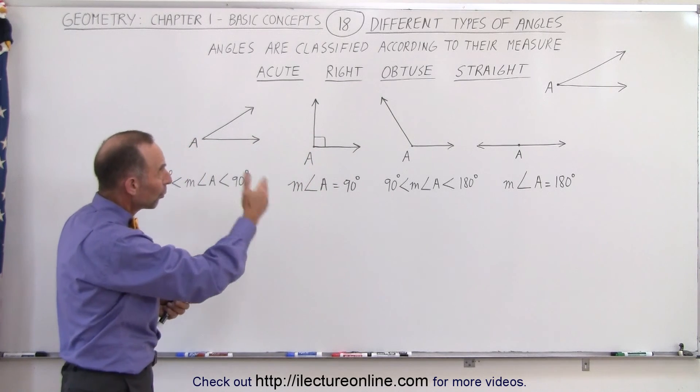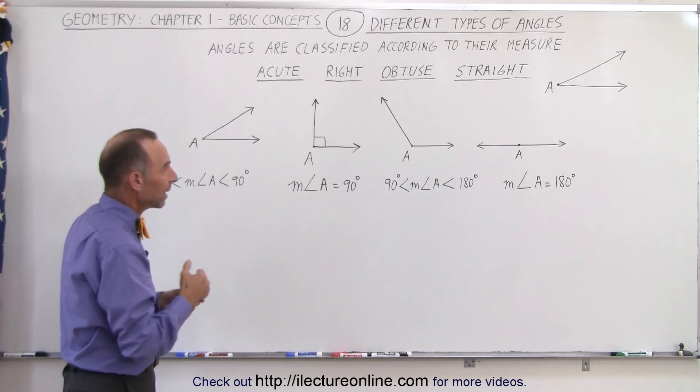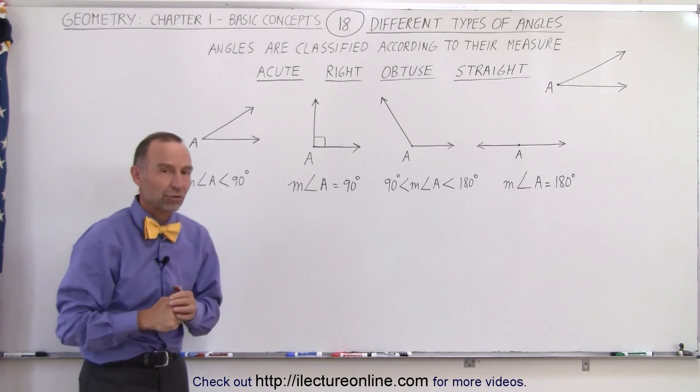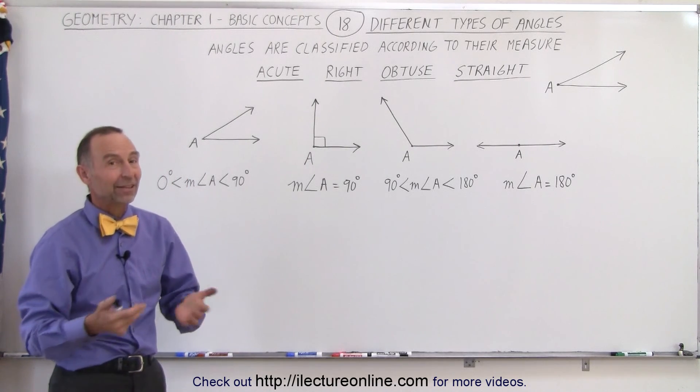So we have acute, right, obtuse, and straight angles depending upon the measure of the angle. And that's how it's done.